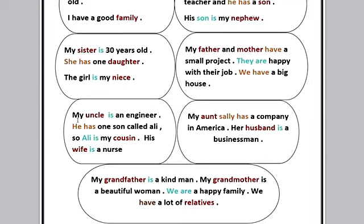My uncle - uncle اللي هو العم أو الخال - is an engineer. جبنا is عشان مفرد singular. He has one son called Ali - عمي عنده ابن اسمه علي. يبقى علي ابن عمي. So Ali is my cousin - يبقى cousin معناها ابن العم.